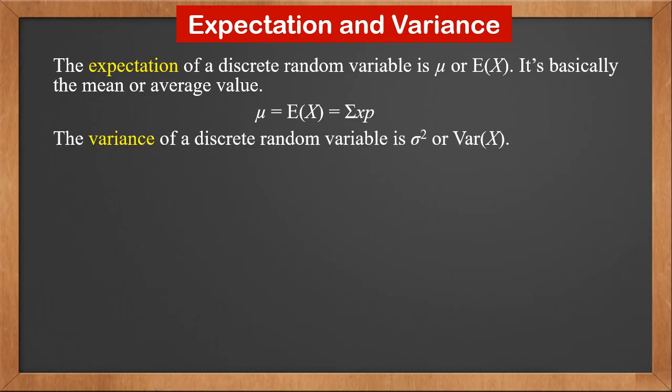The variance of a discrete random variable is σ² or Var(X). The standard deviation is σ. We know variance is either average distance squared to the mean, or mean of squares minus square of the mean. So there are two ways you can calculate the variance of a discrete random variable. It's either Σ(x - μ)²p, or Σx²p - μ².